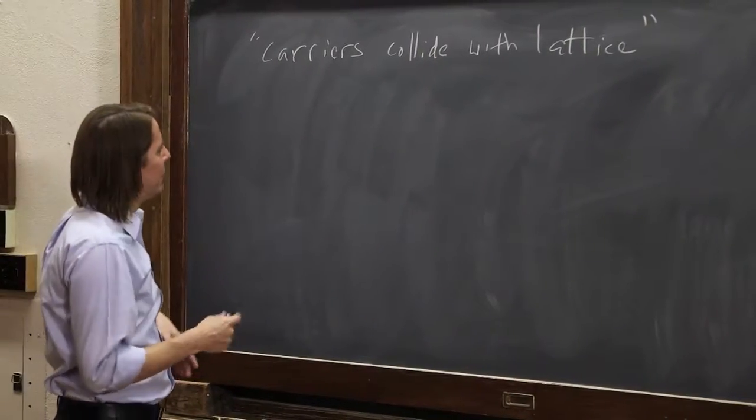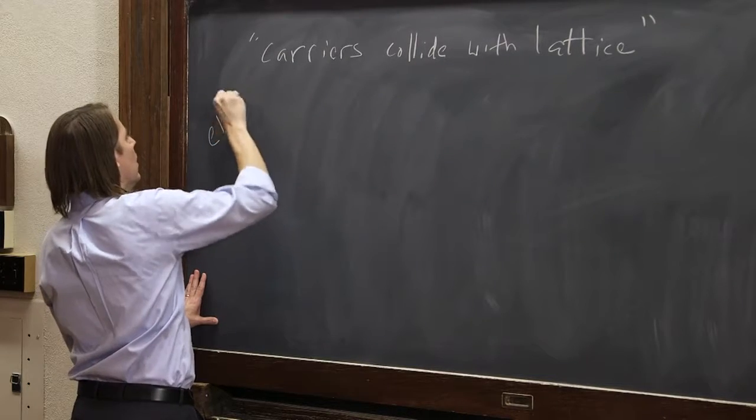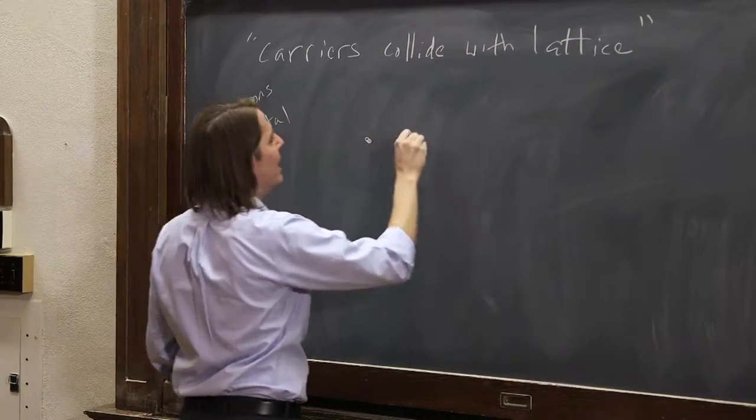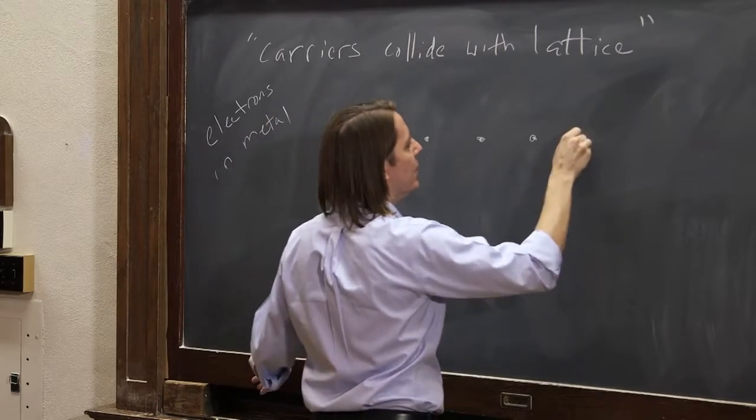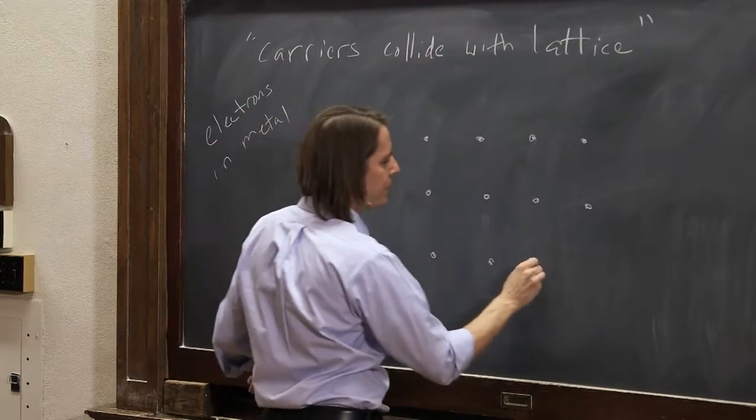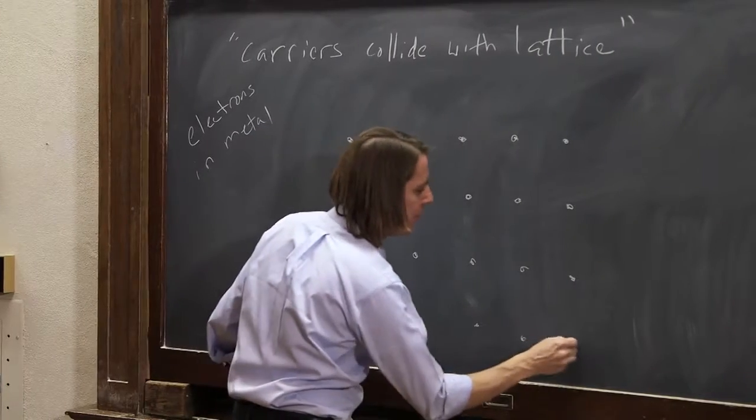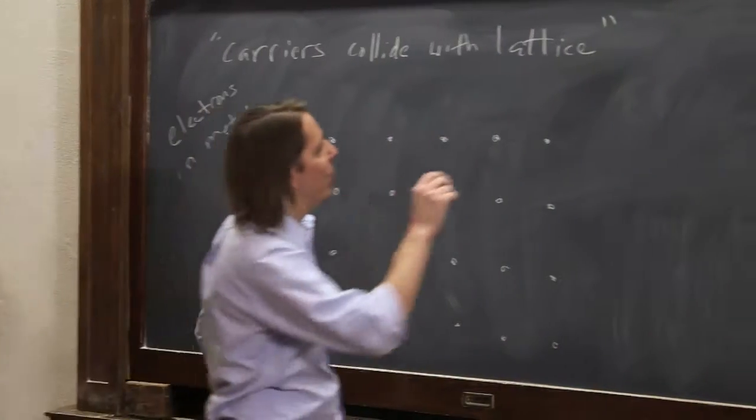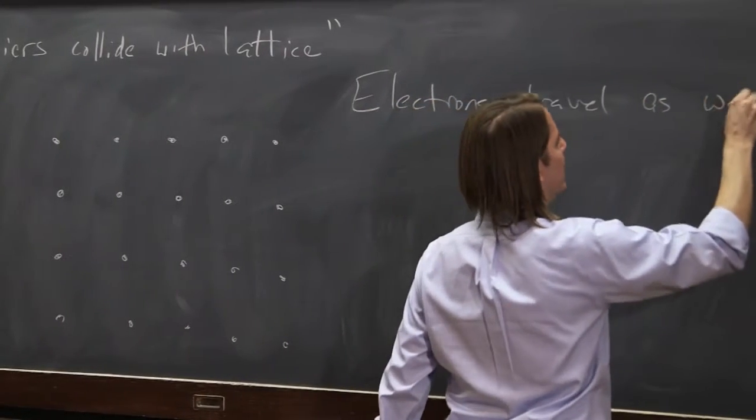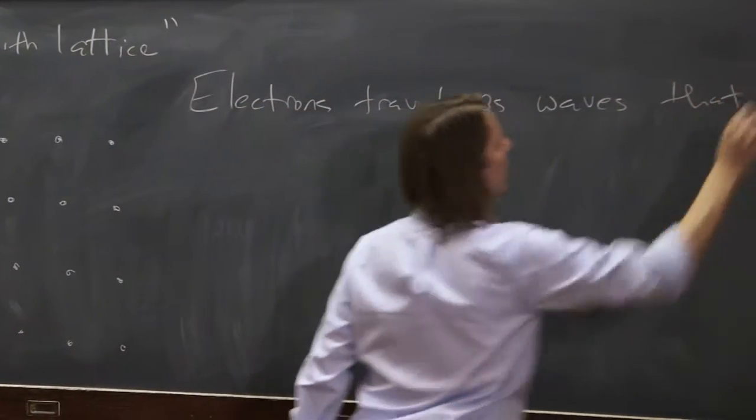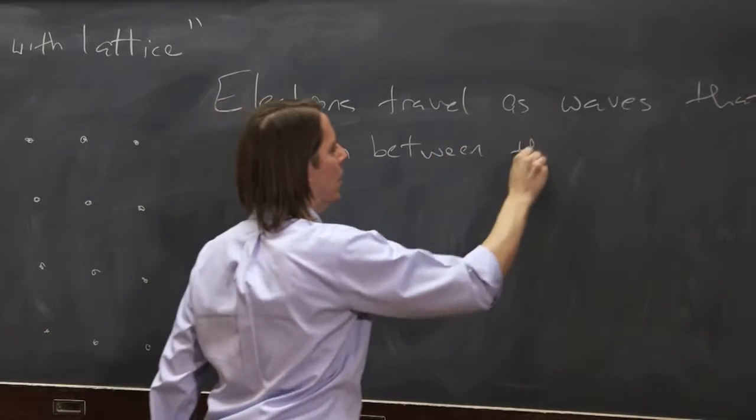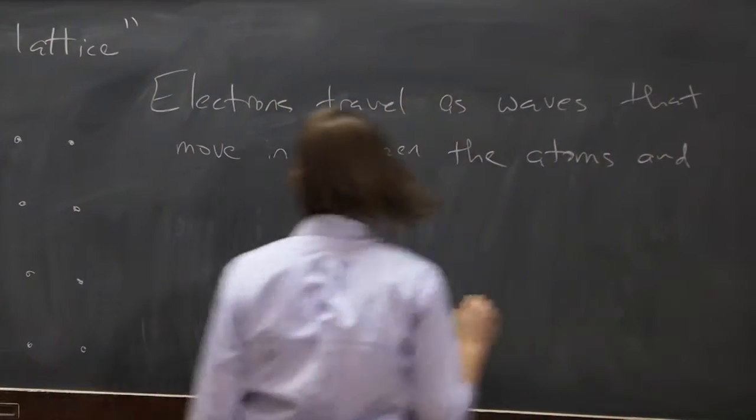So what's really happening? Let's imagine electrons in metal. That's our most common conductor that we study. We know that metals are crystalline, so they have their atoms arranged in a periodic array like this. And they have these electrons that are free to wander around. That's what makes them a conductor. But what we haven't said yet is that the electrons travel as waves that move in between the atoms and don't hit them.